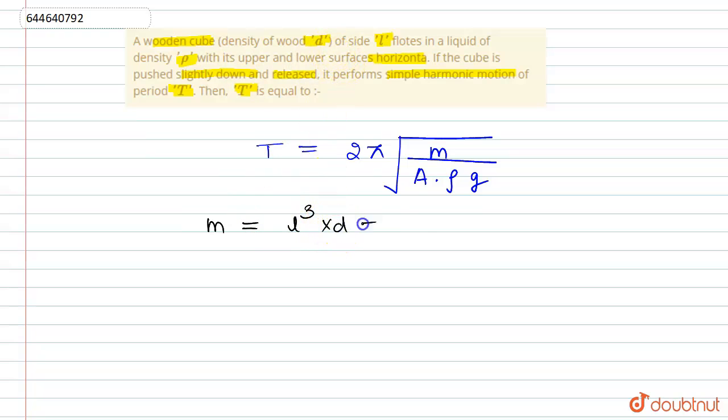We get the time period of SHM equals 2π times the square root of l³d divided by l²ρg, where the mass is l³ times density d divided by area l² times density of the liquid ρ times gravity g.